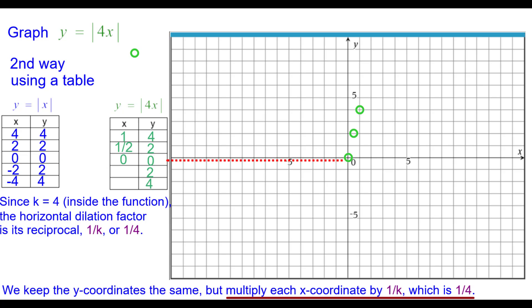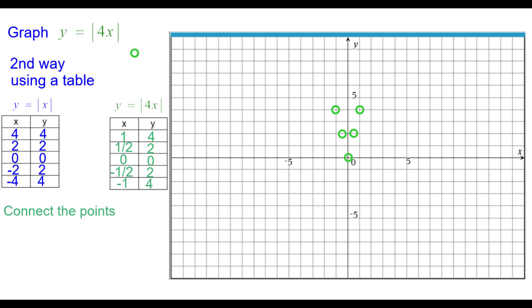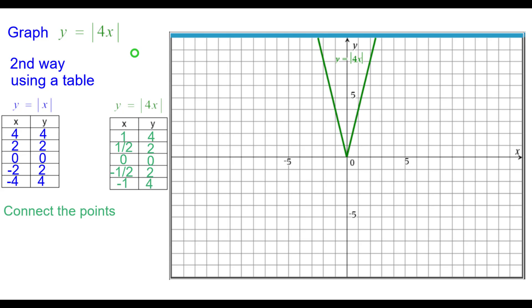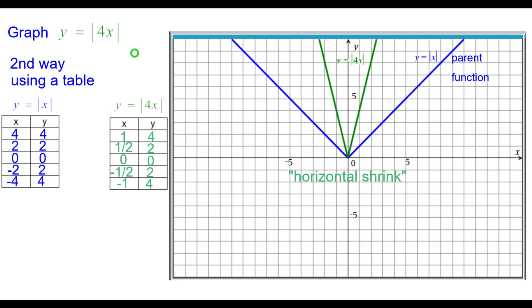Press pause to do the other two points and resume when you're ready. Negative 2 times 1 fourth is negative 1 half comma 2. Negative 4 times 1 fourth is negative 1 comma 4. Connect the points and again we compare it to the parent function. This is an example of a horizontal shrink. The green is a horizontal shrink of the absolute value function.